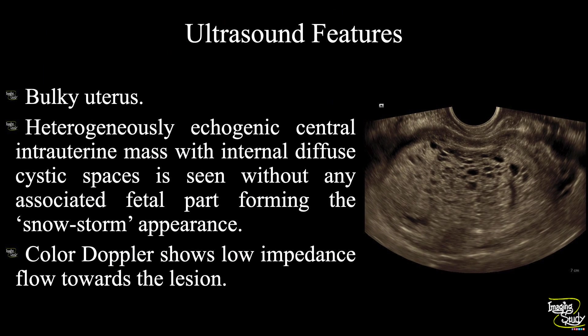In summary: a bulky uterus is seen. There is a heterogeneously echogenic central intrauterine mass with internal diffuse cystic spaces, without any associated fetal parts, forming the snowstorm appearance. Color Doppler shows low impedance flow towards the lesion. These features conclude it as a case of molar pregnancy, preferably hydatidiform mole.